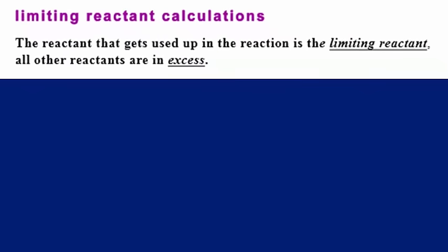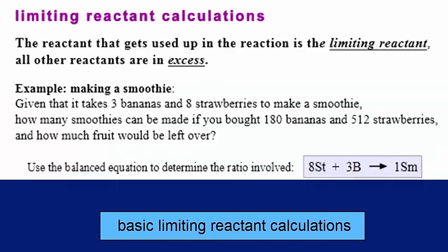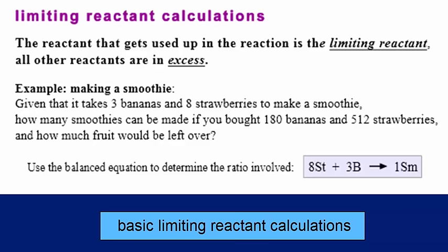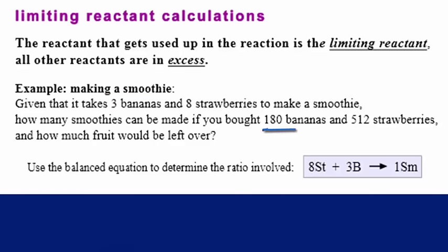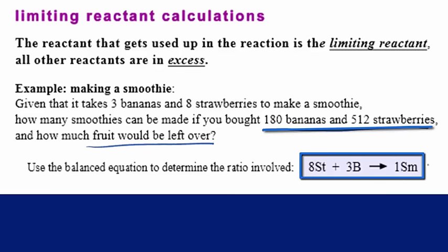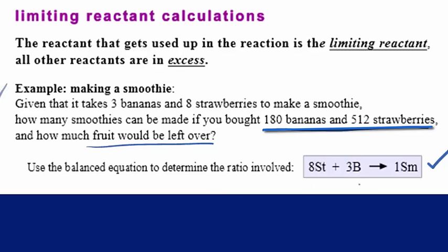Given a certain amount of starting material, how can we use that coefficient ratio to determine which reactant is limiting and which is in excess, as well as determining the amount of product formed? Let's start with something simple — a recipe. Recipes always have certain ratios of ingredients that give us a straightforward access to the type of calculations used in limiting reactants. Let's say it takes 3 bananas and 8 strawberries to make a smoothie. How many smoothies can be made if you buy 180 bananas and 512 strawberries? And also how much fruit would be left over. We need a balanced equation to start with: 8 strawberries and 3 bananas gives 1 smoothie — there's our coefficient ratio.